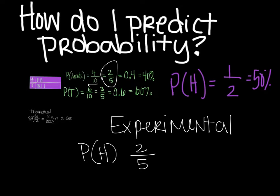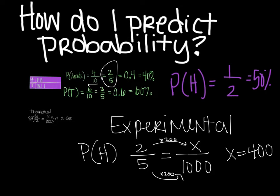So two out of five was my experimental probability. Now let's say I want to know what that would be if I did that a thousand times. What would it be? So I'll go across this time. So five times what is a thousand? And that is times me by two hundred. So two times two hundred would be four hundred. So I can expect if I were to continue my experiment, that four hundred out of the a thousand would be heads.